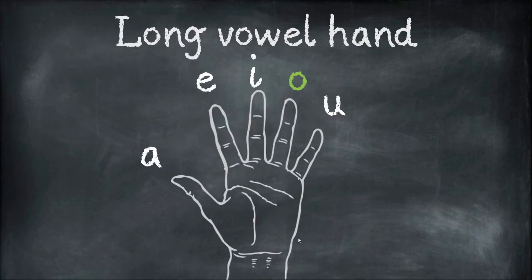Stretch your hands out. Now we're going to say the long vowel sounds. A A A I O And U. So the letter O can also say its name O.